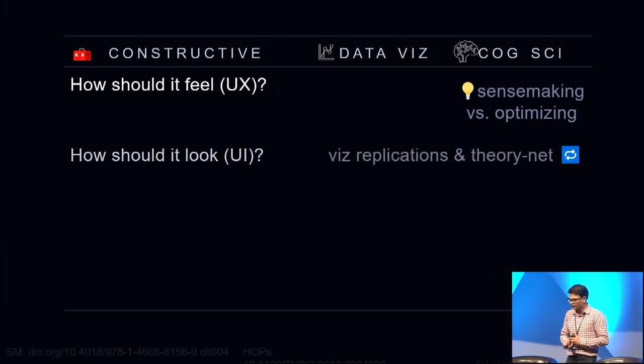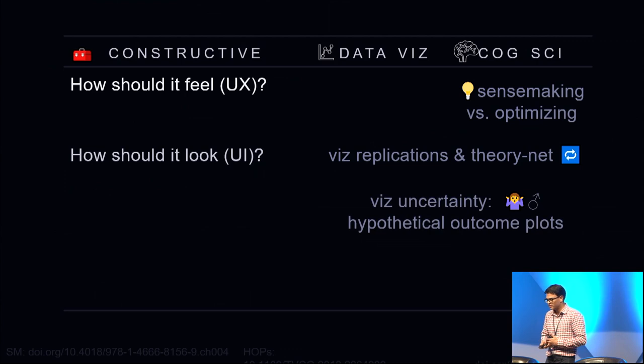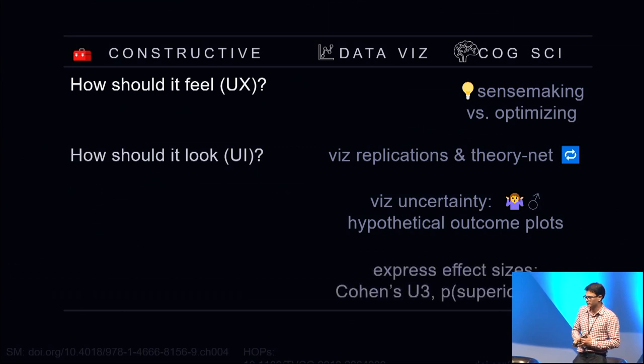Another thing that can be very helpful is visualizing replications and creating sort of a map of theories in a network diagram, which is very exciting to us and we have a few little prototypes that we may show later. As well as visualizing uncertainty, we can bring in quite a lot of information from human-computer interaction. There's quite a lot of literature being done, work being done in that area that shows that hypothetical outcome plots which are animated plots can be very useful for clearly showing the uncertainty of effects. And we have all kinds of other psychological evidence. I can't go into too much detail, but there's plenty of meta-scientific and psychological research on expressing effect sizes in particular ways using Cohen's U3 and the probability of superiority that is very useful for clearly conveying effect sizes beyond just Cohen's D or something like that.